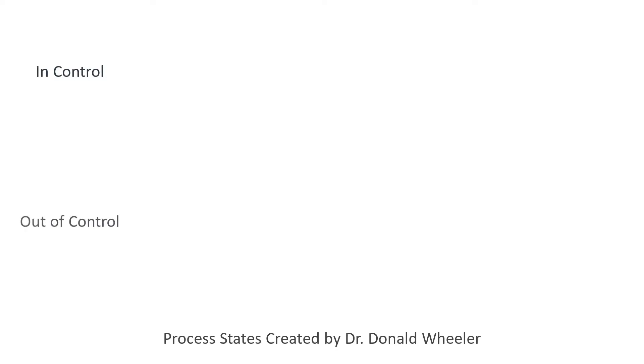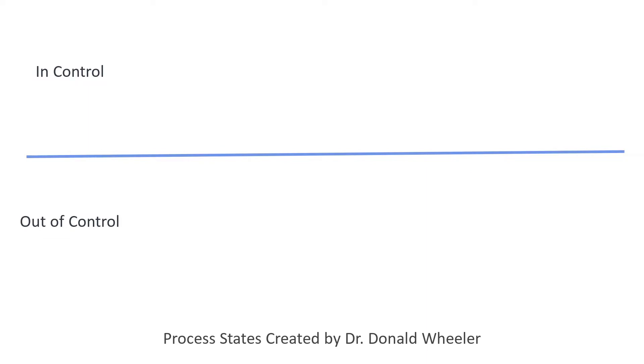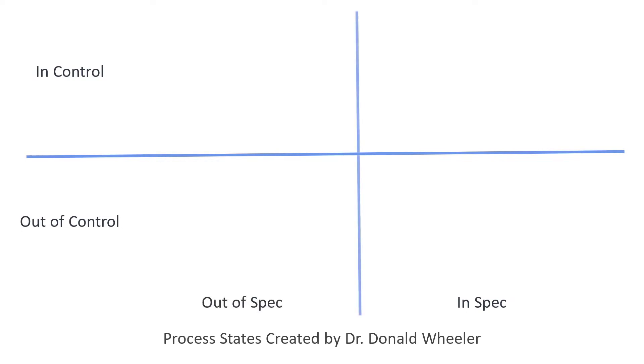These process states were created by Dr. Donald Weider. We're going to start with the question: is the process in control or out of control? We put a horizontal line there that starts to form our quadrant. Then we're going to take a look at our product — in spec or out of spec — and put a vertical line in.